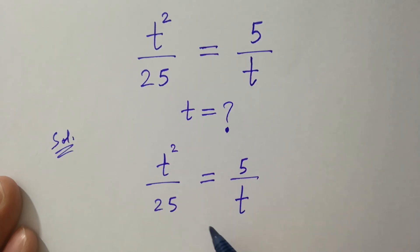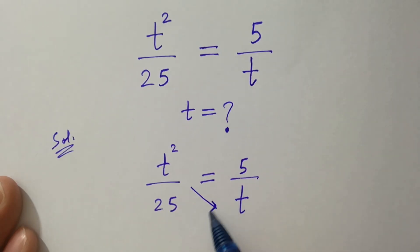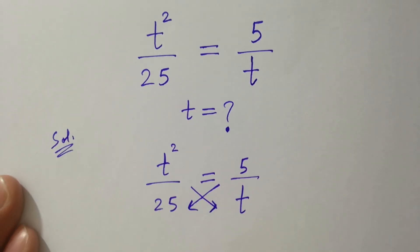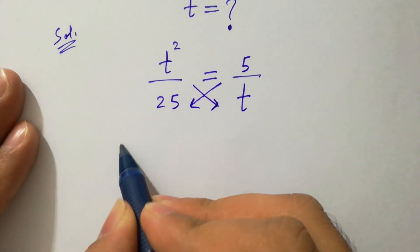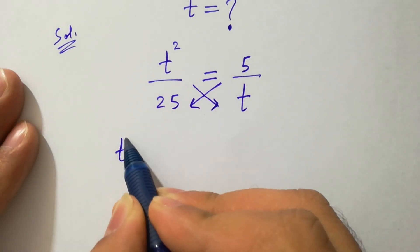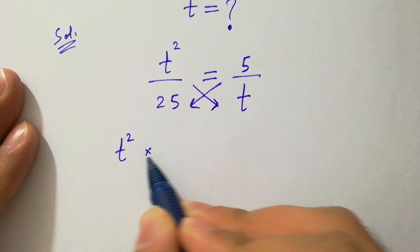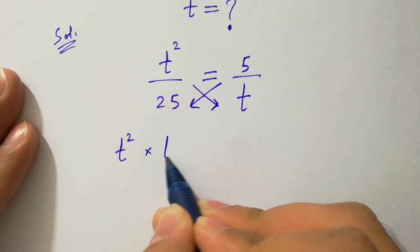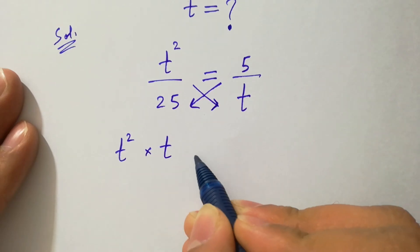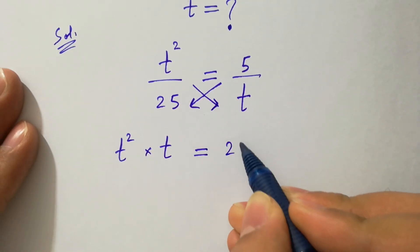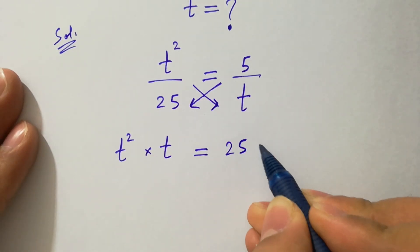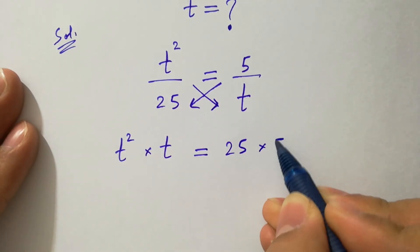This can be solved by cross multiplication. We have t squared times t equal to 25 times 5.